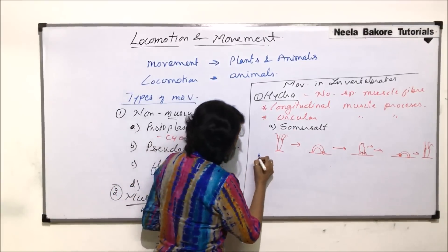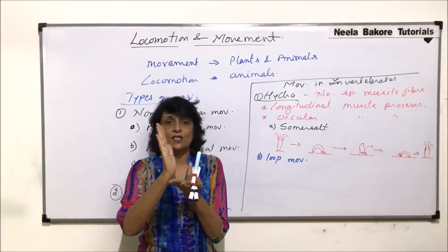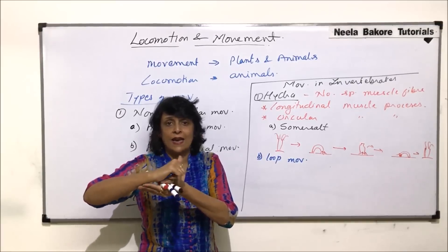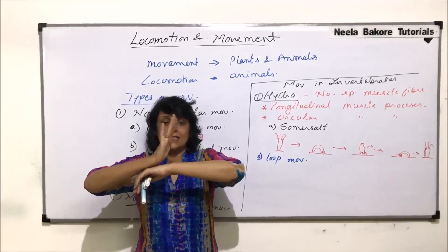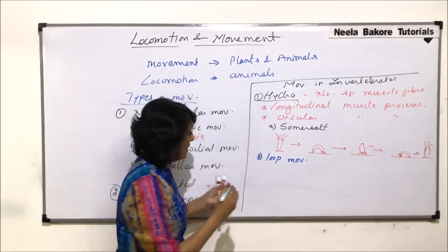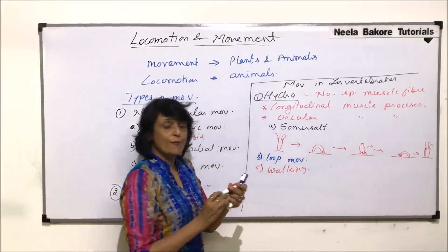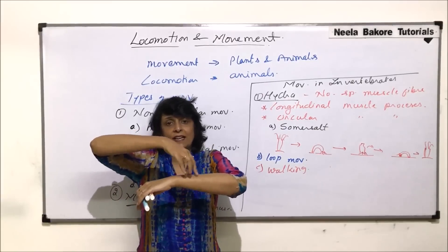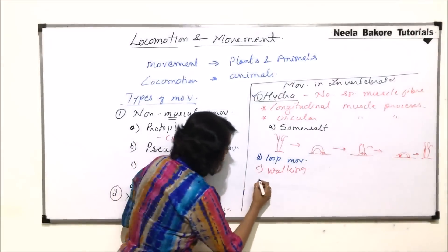The second type is loop movement. In loop movement, hydra is attached, bends, attaches with its oral end, detaches from the base, moves ahead, becomes straight again — moving in the form of loop formation. The third type is walking movement. Hydra is attached, bends, gets inverted so that the tentacles are at the bottom, and walks using its tentacles. Wherever it finds a suitable substratum, it becomes straight again.